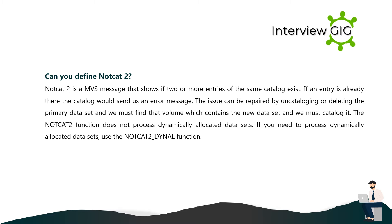Can you define NOT CAT 2? NOT CAT 2 is an MVS message that shows if two or more entries of the same catalog exist. If an entry is already there, the catalog sends an error message. The issue can be repaired by uncataloging or deleting the primary data set, finding the volume which contains the new data set, and recataloging it. The NOT CAT 2 function does not process dynamically allocated data sets; if you need to process those, use the NOT CAT 2_DINO function.